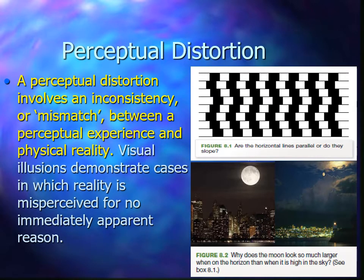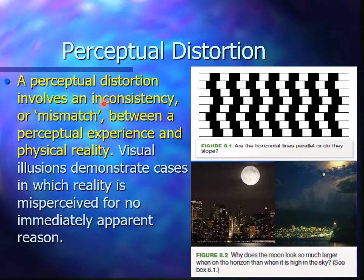A perceptual distortion involves an inconsistency or a mismatch between a perceptual experience and physical reality. So what you see and what is actually real are two different things — they don't actually match up.